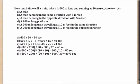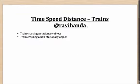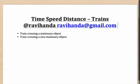So as you can see, these are the various cases possible when you have a train and the other object is either moving or stationary, moving in the same direction or in the opposite direction. These are broadly the cases you can get in time, speed and distance questions based on trains. With this I'd like to wrap up the session. You can connect with me on Twitter at ravihanda or via email at ravihanda@gmail.com. Thank you!